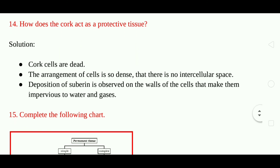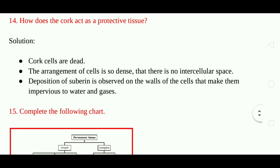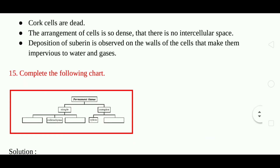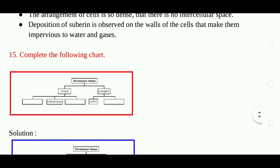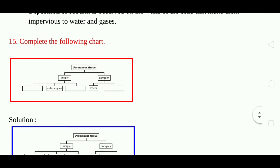Question 14: How does the cork act as a protective tissue? Answer: Cork cells are dead. The arrangement of cells is so dense that there is no intercellular space. Deposition of suberin on the walls of the cells makes them impervious to water and gases.